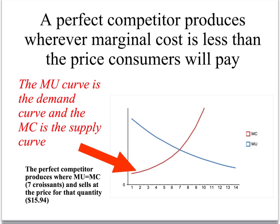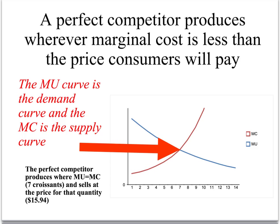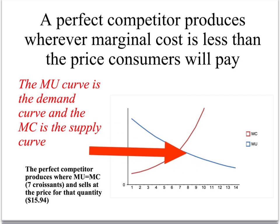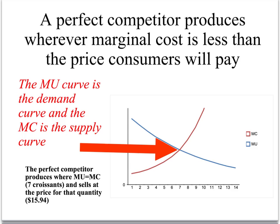If the price is down here, they'll make 1. If the price is here, they'll make 2. If the price is here, they'll make 3. And they keep on going up until this point — right at the point where the price of croissants just equals the cost of making that marginal croissant. That's it!